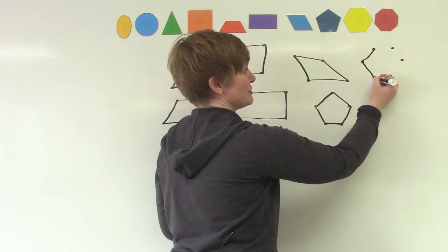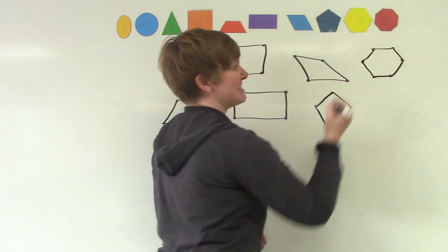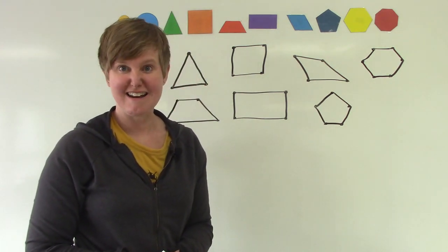It has one, two, three, four, five, six sides. A six-sided shape is called a hexagon.